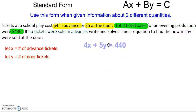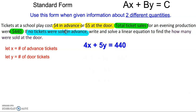Which means we can write the equation: 4x plus 5y had to total $440. $4 times however many advanced tickets plus $5 times however many door tickets had a total sales of $440. But then it tells us no tickets were sold in advance, and we let x equal the number of advanced tickets, which means x will have a value of 0.